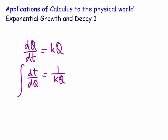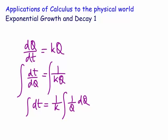Then we integrate both sides with respect to Q. So we integrate this side with respect to Q, and we end up getting the integral of dt is equal to 1 over k, integral of 1 over Q dQ.